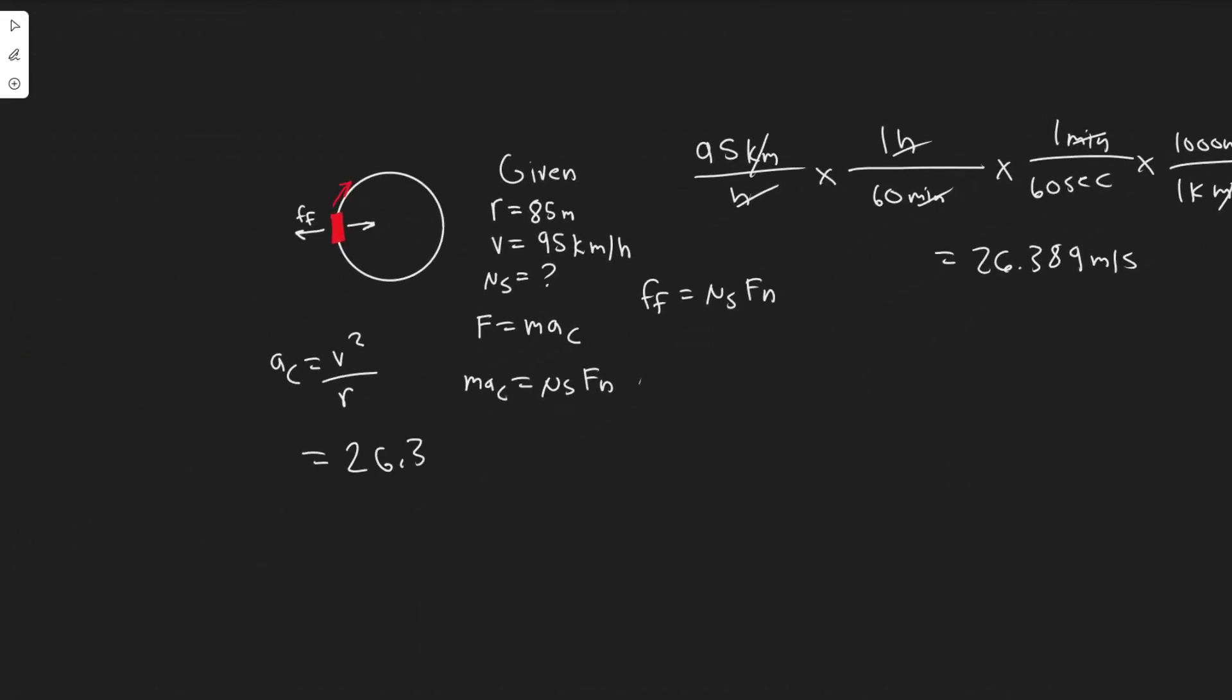Plugging in to find the centripetal acceleration: 26.389 squared divided by the radius 85. Squaring this value, dividing by 85, we get 8.193 meters per second squared since it's acceleration.